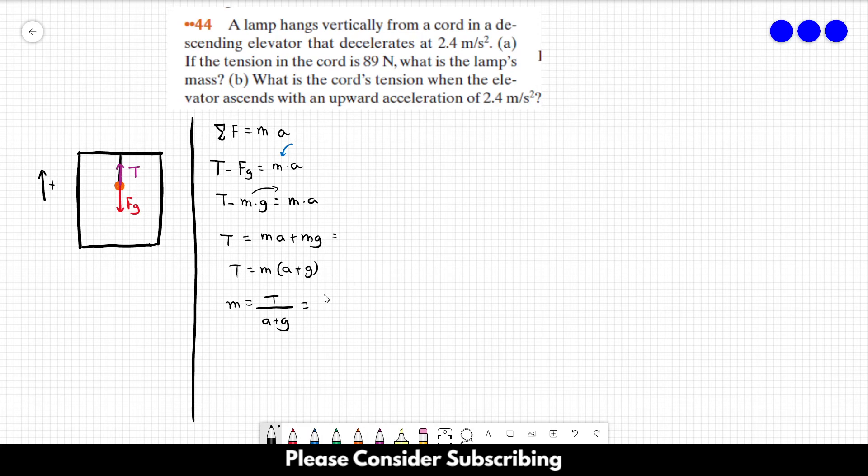The tension is 89. The acceleration is positive, right? Because the elevator is descending, the elevator is going to this direction, it is decelerating. So, the acceleration points upwards. So, the acceleration is positive, it's 2.4 positive. The acceleration of gravity points downwards, so it should be negative. However, we already used the negative sign over here. So, the acceleration of gravity is positive because we already added the minus sign over here. So, plus 9.8. And this gives us roughly 7.3 kilograms. So, that's the answer of letter A.